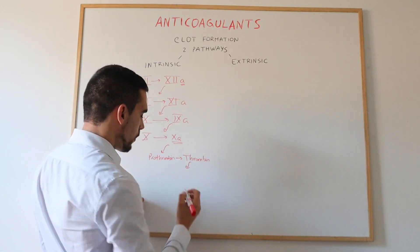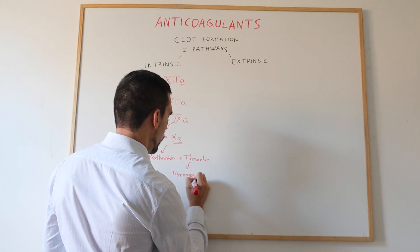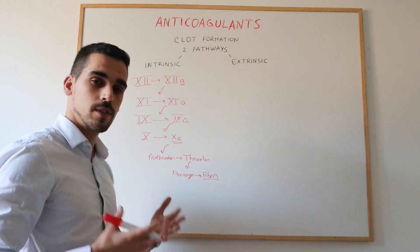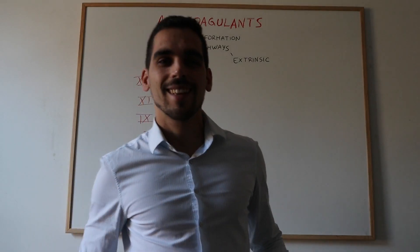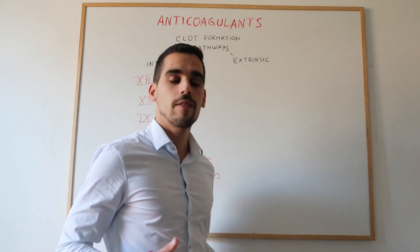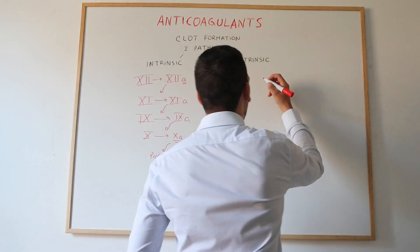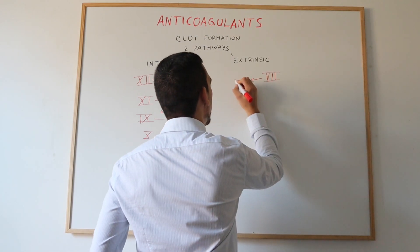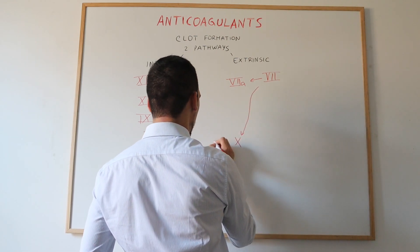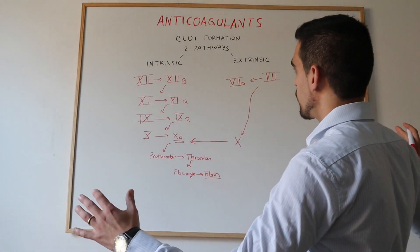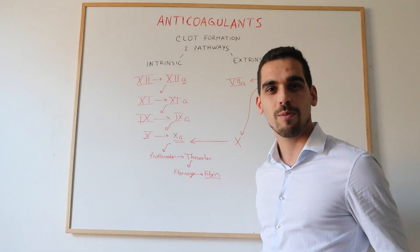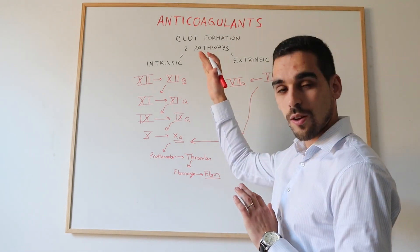Thrombin leads to activation of fibrinogen into fibrin, and it is the fibrin that gives strength to the clot that is formed. Secondly, we have the extrinsic pathway. The endothelial cells in the blood vessel, once damaged, release a tissue factor which activates Factor 7. This leads to activation of Factor 10, and that is the point where both pathways converge into the common pathway, which leads to formation of fibrin that stabilizes the clot.